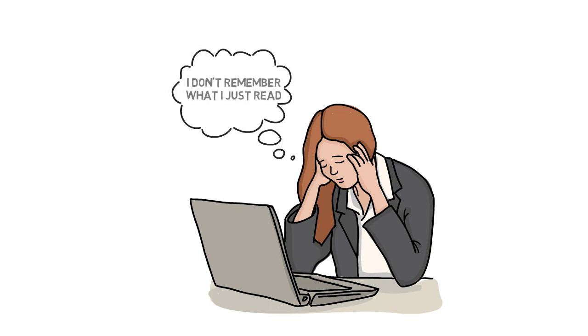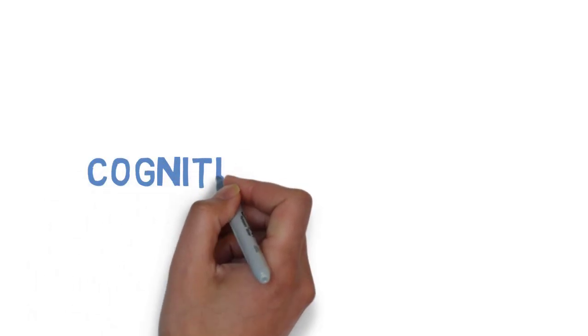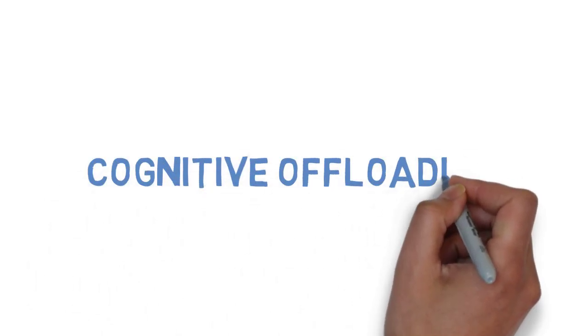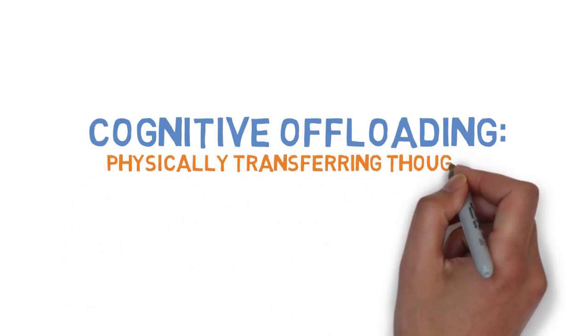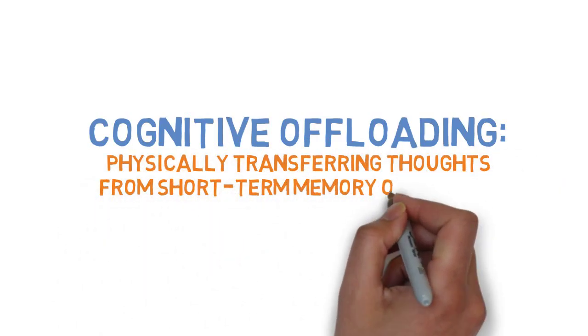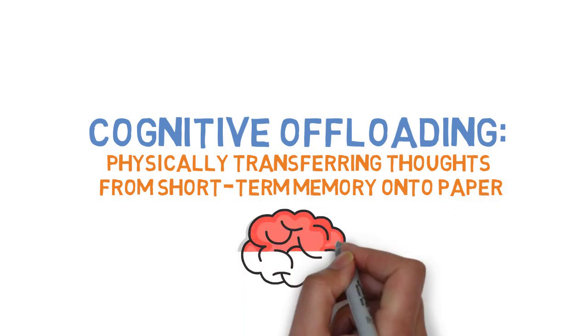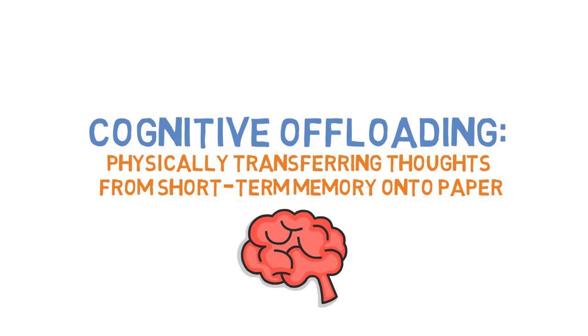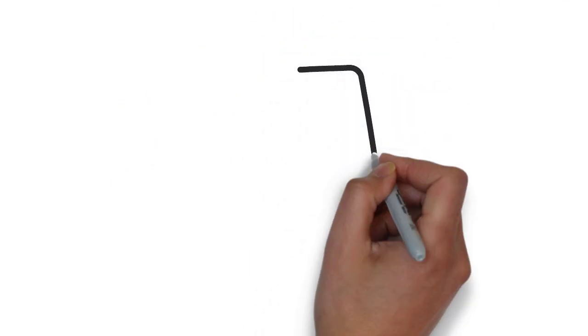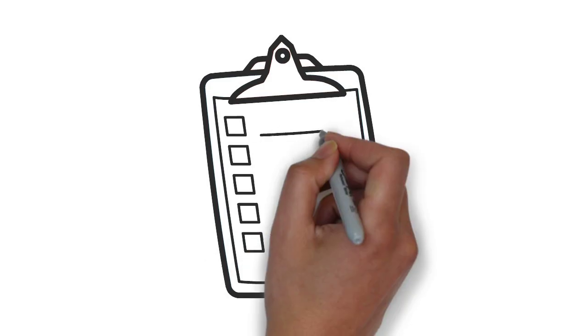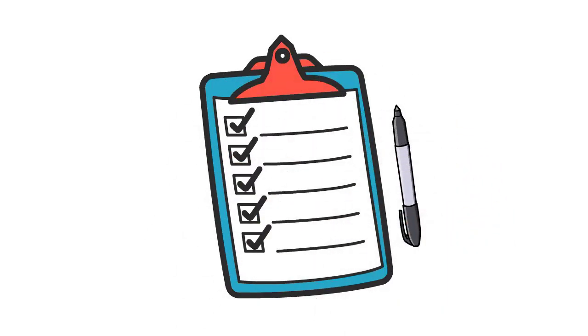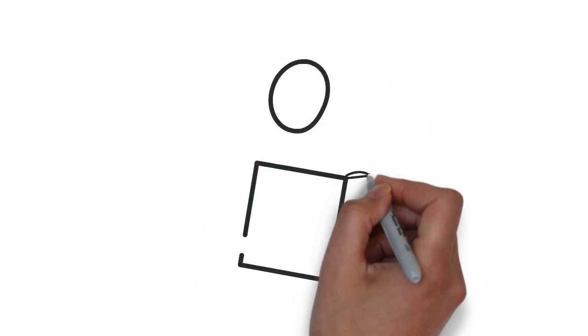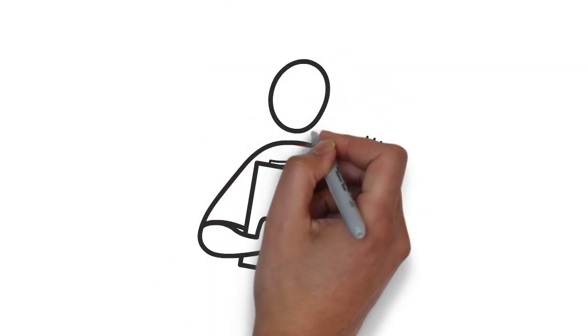A strategy that you can use to help you focus on an important task is cognitive offloading. Cognitive offloading involves physically transferring all your thoughts from your short-term memory onto a piece of paper. By clearing your mind, you now have extra mental space that you can use to process and remember the information that you are studying. So before you begin studying, write down all the things you need to do on a to-do list to get them off your mind. You can now purely focus on the content that you are studying.